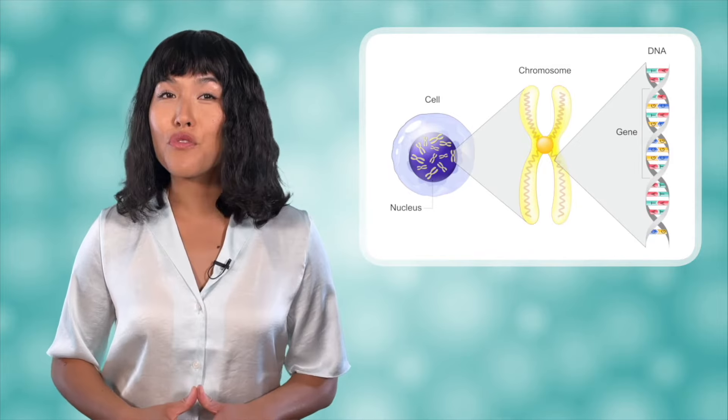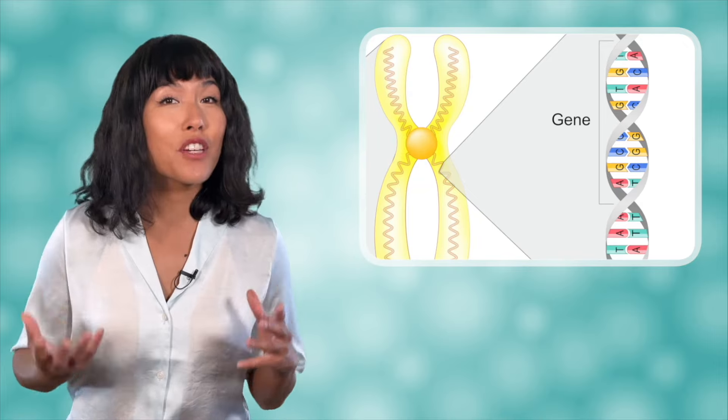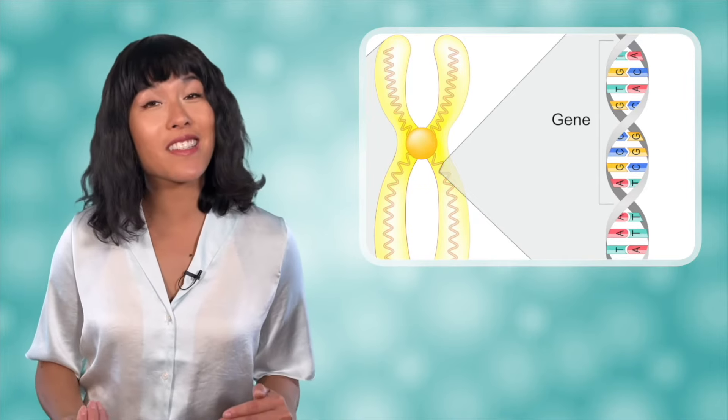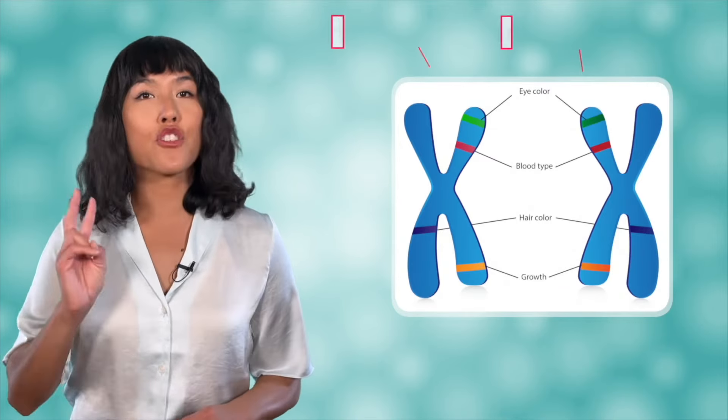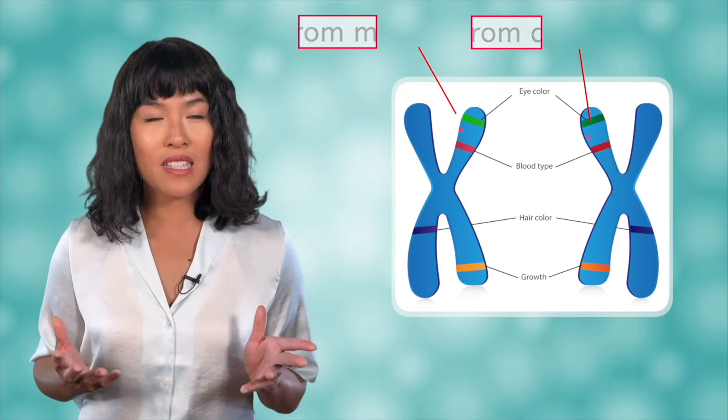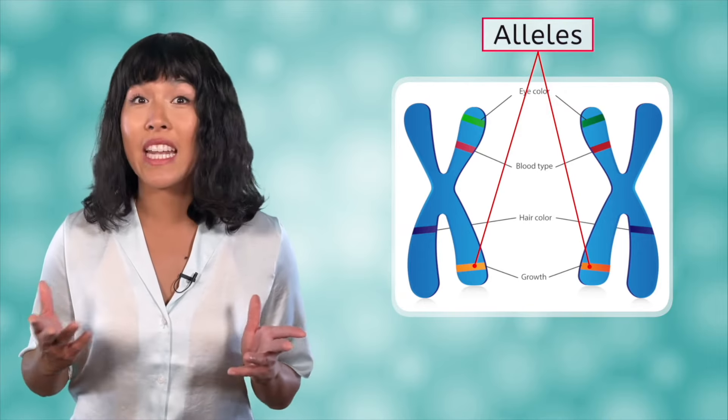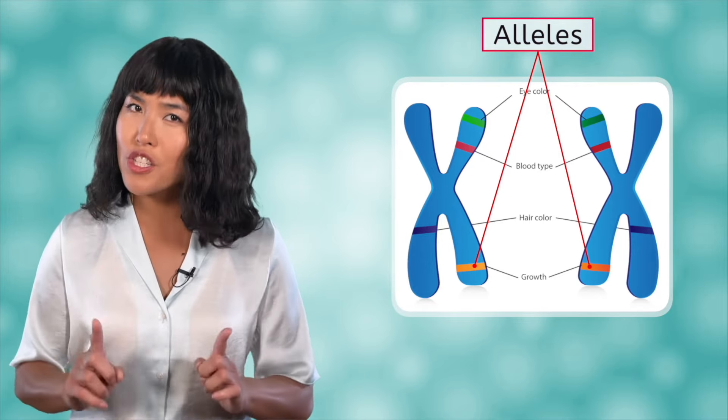You may remember from unit one that sections of chromosomes are called genes and that they code for specific proteins which in turn give us specific traits. For every gene you have two copies, one from each parent. Each of these copies is called an allele, and the combination of alleles you have for any gene determines which trait you show.